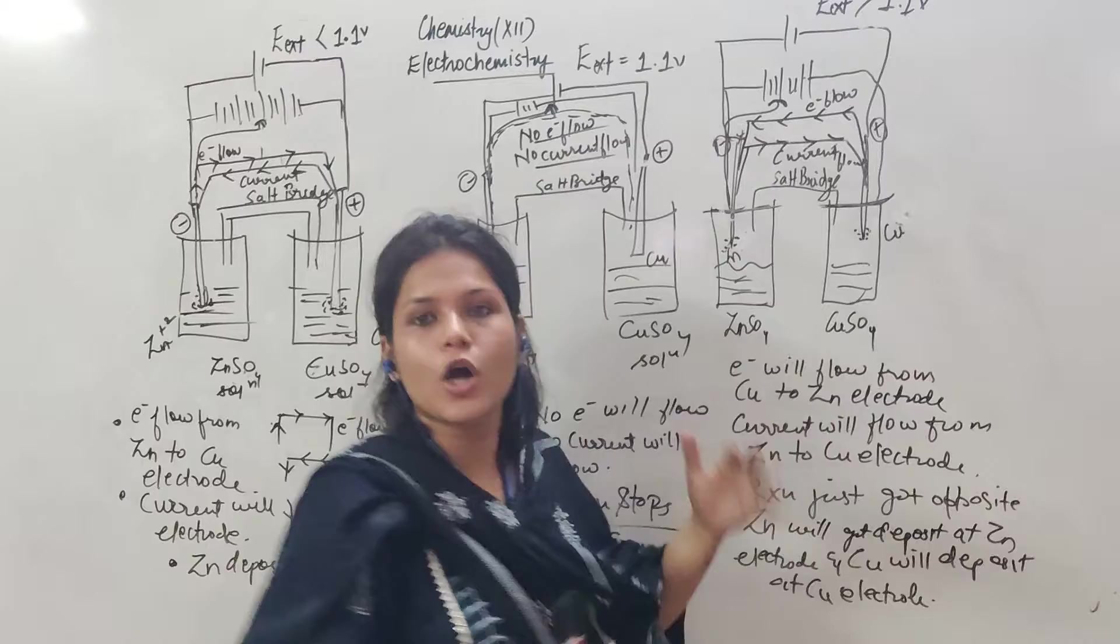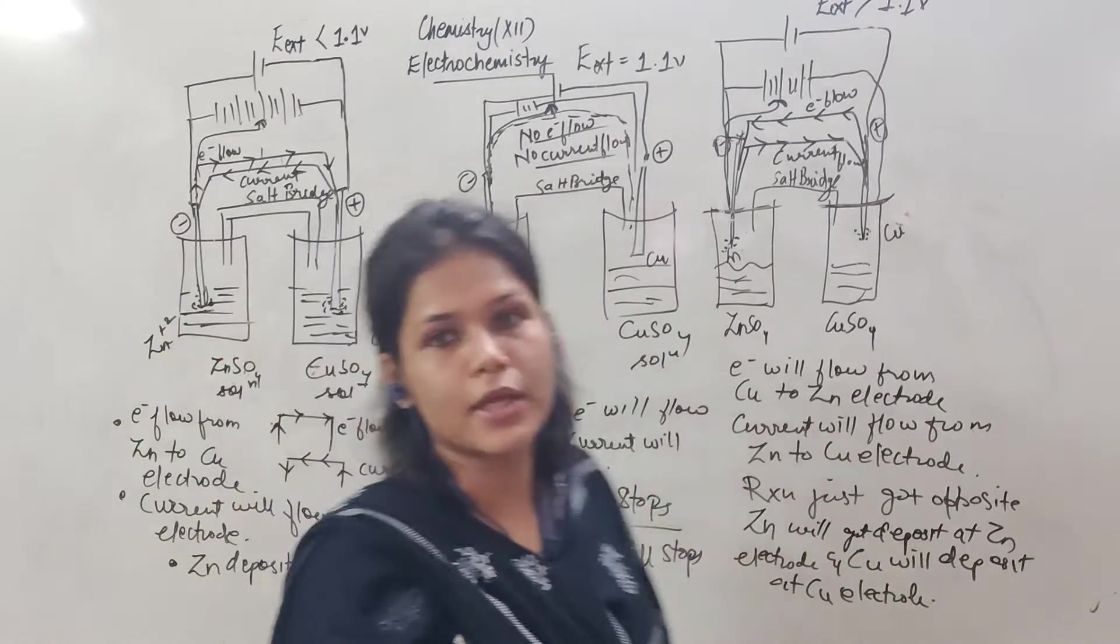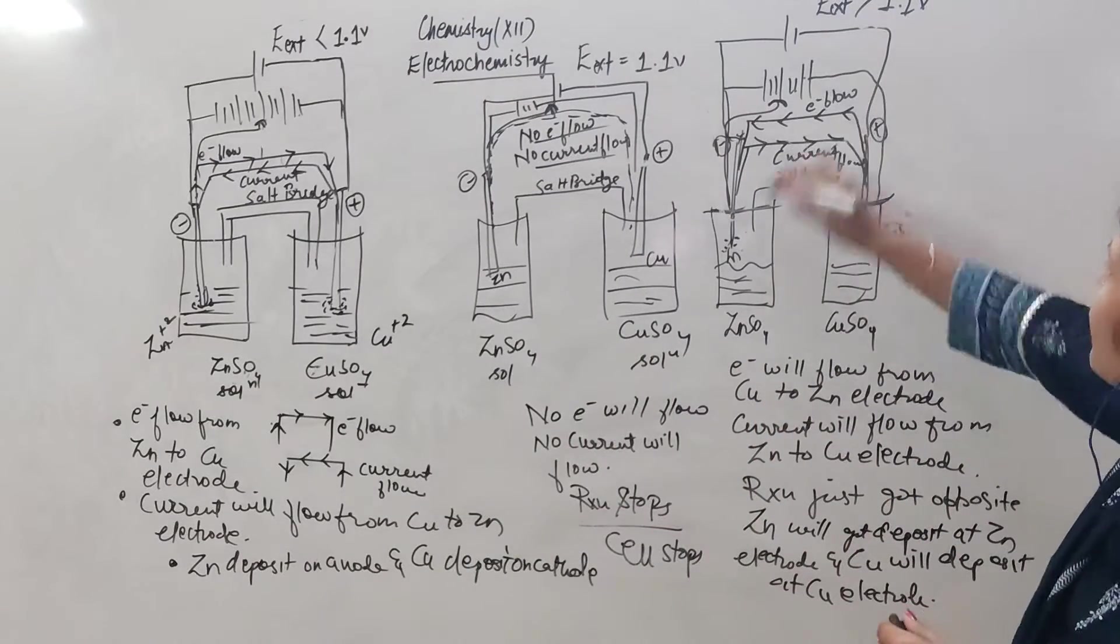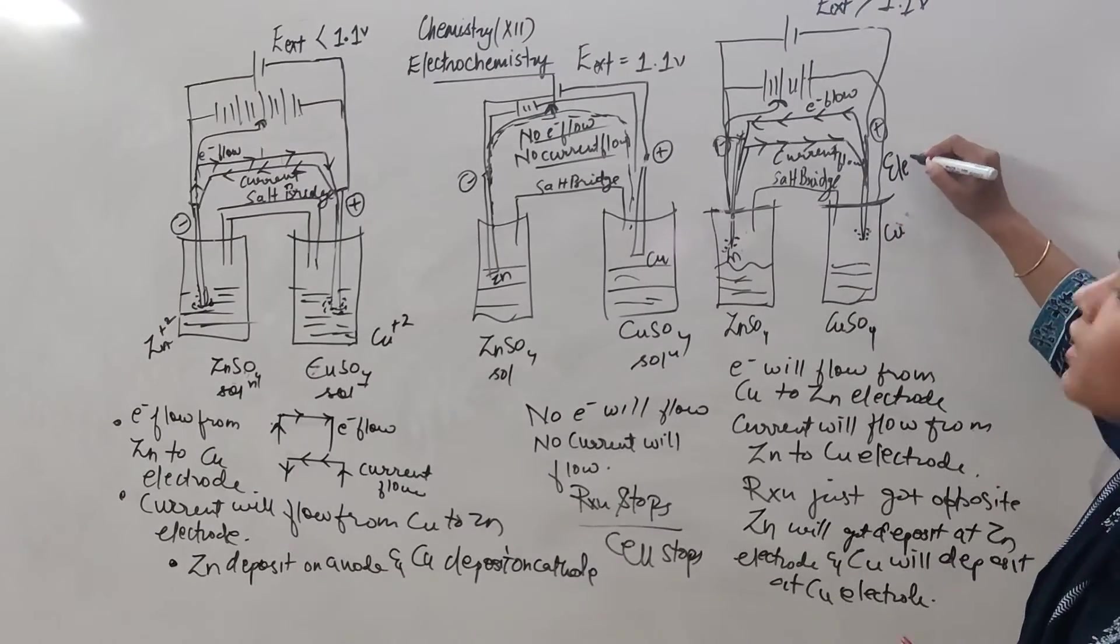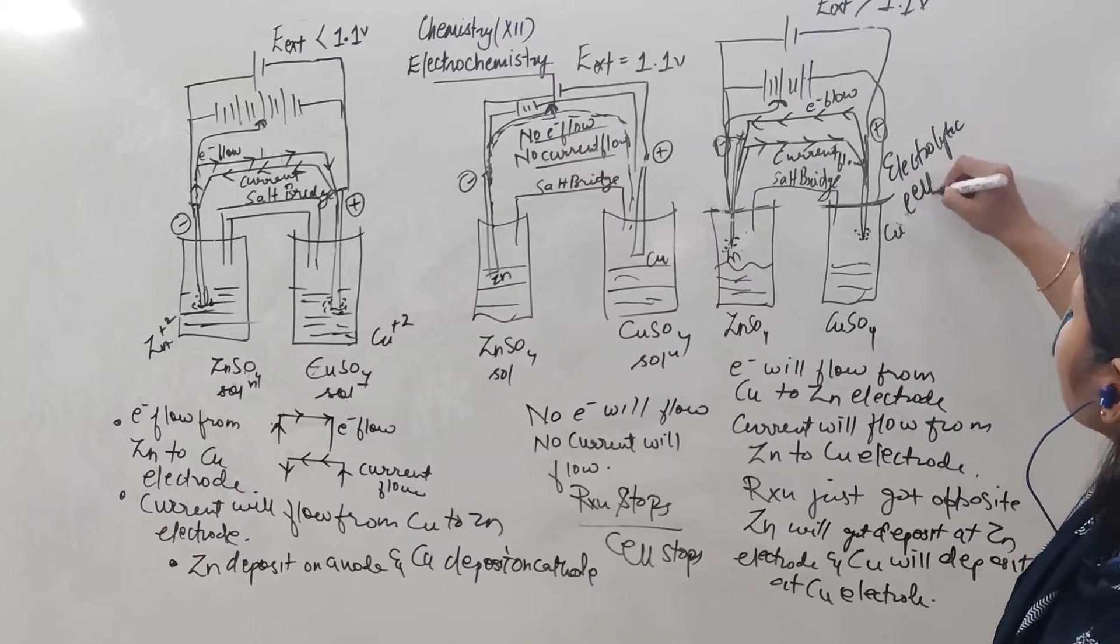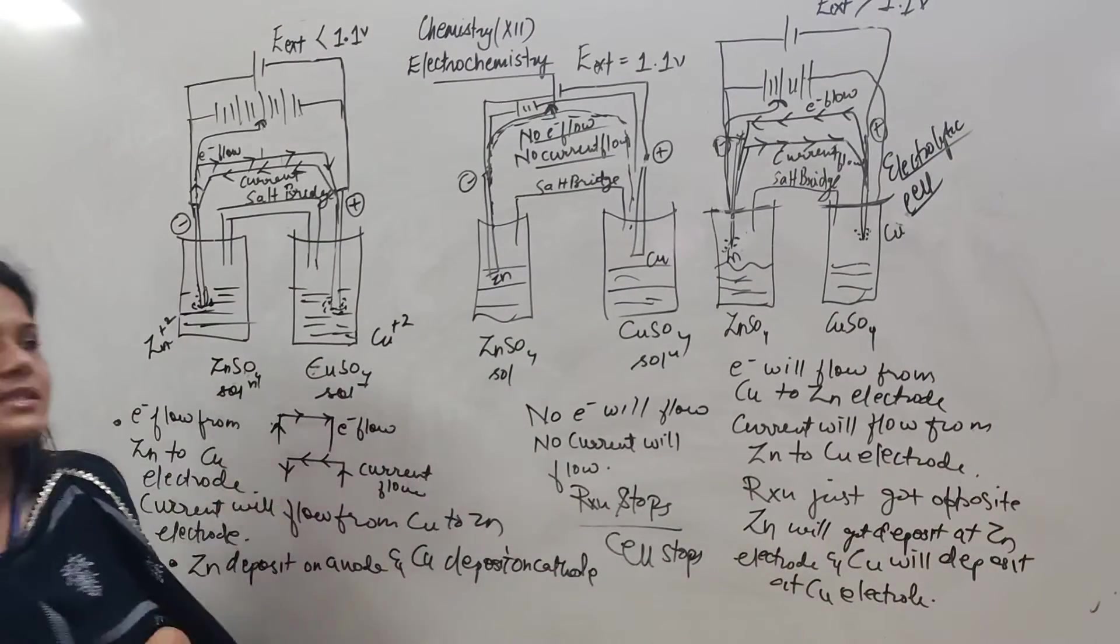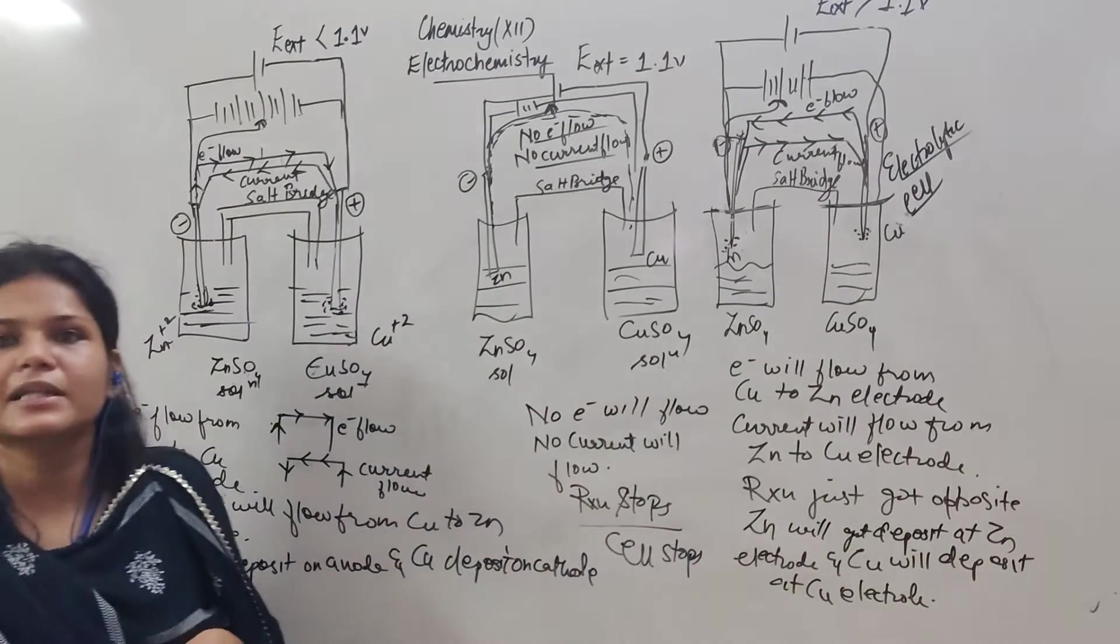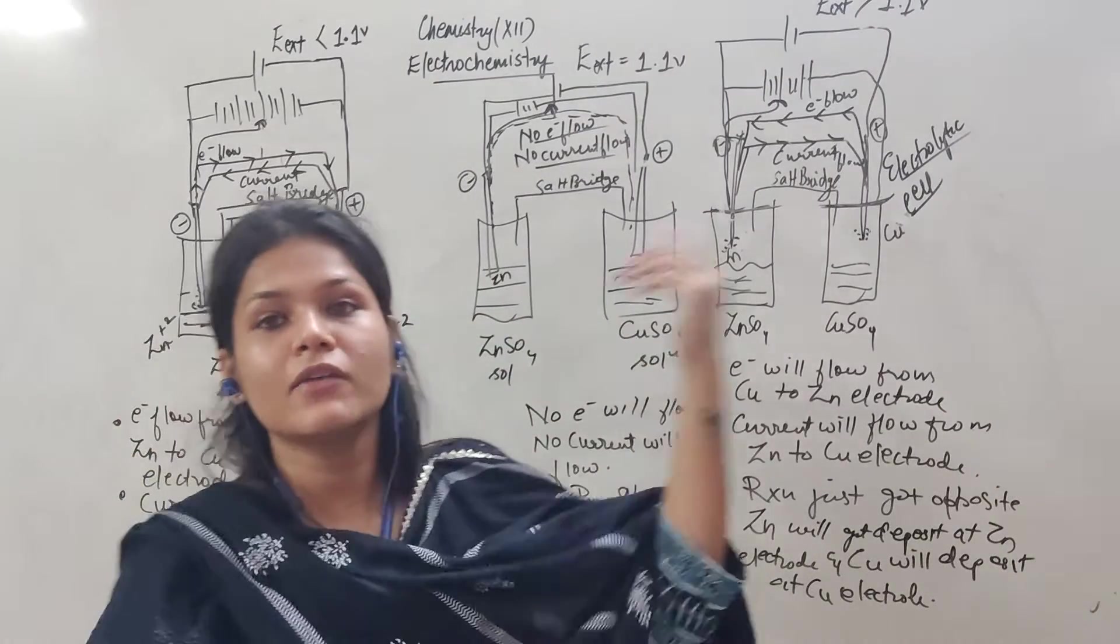As we compare, cases 1 and 3 are just the reversal. So we have electrical energy transformed into chemical energy. Which means it will be called electrolytic cell. It will become electrolytic cell.